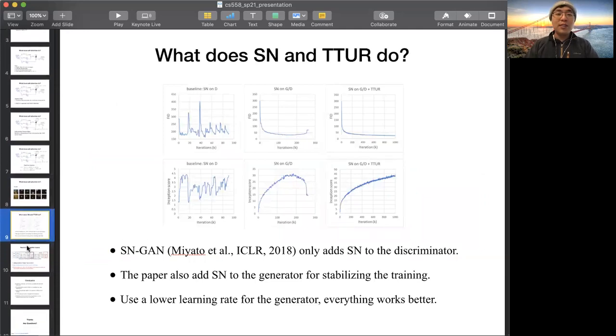Next we want to introduce, what does the spectral normalization and the TTUR do? In the experimental result here, the first column shows the baseline, which applies only spectral normalization on the discriminator. The second column applies the spectral normalization on both generator and the discriminator. The third column also applied TTUR based on the second column.